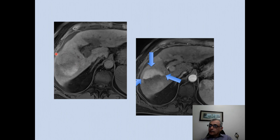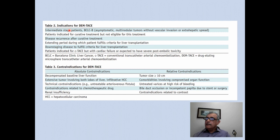Post-procedure MRI may show areas of viable tumor requiring subsequent treatment four to six weeks later, provided there is no liver decompensation. Indications for drug-eluting bead TACE include intermediate stage BCLC B patients indicated for curative treatments but not eligible, disease recurrence after curative treatment, extending periods during which patients fulfill criteria for liver transplantation, and downstaging disease to fulfill transplant criteria. Absolute contraindications include decompensated liver function, extensive tumor involvement of both lobes, infiltrative HCC, and untreatable arteriovenous fistulas.